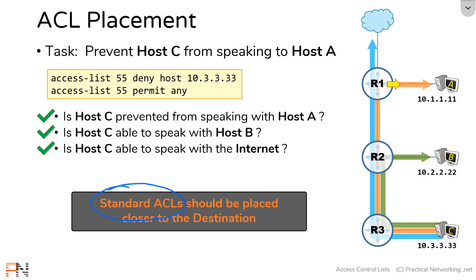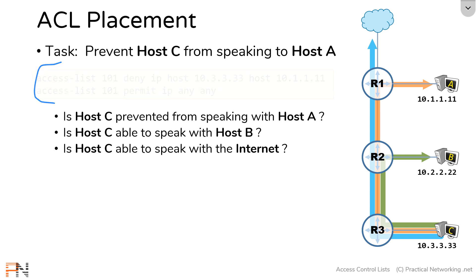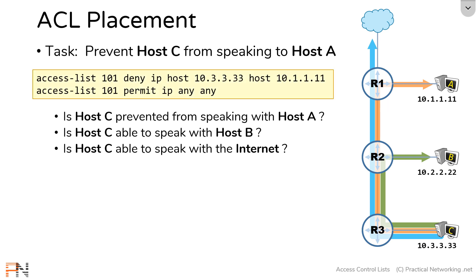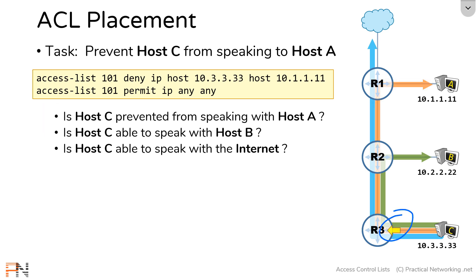That takes care of standard access lists. What about extended access lists? Let's reconfigure our access list as an extended access list and step through the same process. Our numbered extended access list granularly filters traffic with the source IP address of host C and a destination IP address of host A. Just like before, we still have six different places we can apply that access list. Let's step through each of those locations. The topology hasn't changed, which means the path for host C to speak to all these resources is the same. If we apply that access list at the first location, each of those paths goes through our access list.